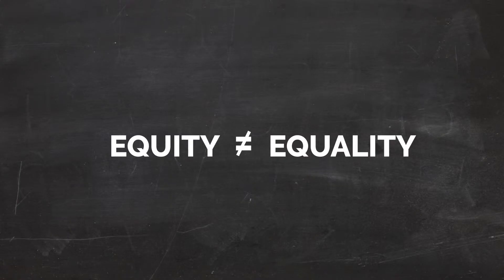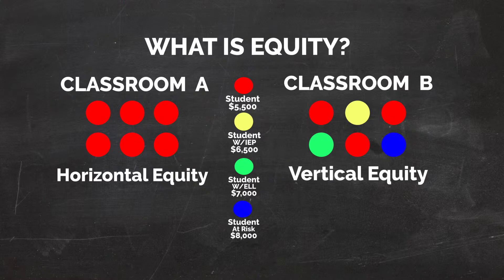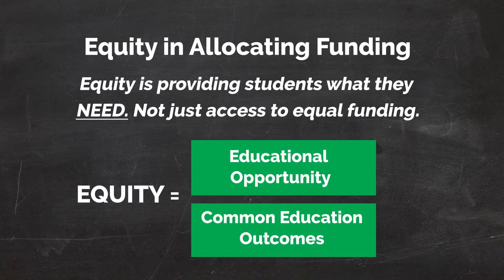I want to make one distinction here: equity is not equality. Equality is treating everybody exactly the same. Equity is ensuring dissimilar students get exactly what they need. So when a student is a special education student, when a student's first language is not English, when a student comes from an at-risk background — studies have found that these students require additional resources in order to educate. We need to ensure that the funding distribution model within the Clark County School District addresses those needs and that those students receive the additional funding they need to reach common educational outcomes. If we take horizontal equity and vertical equity and combine the two together, equity in the school district equals educational opportunity for all students and providing for those common educational outcomes for every student in the Clark County School District.